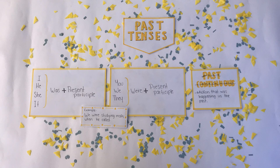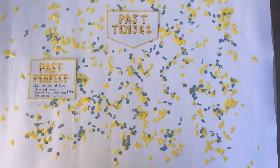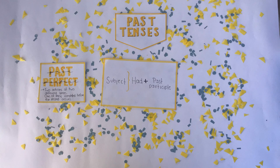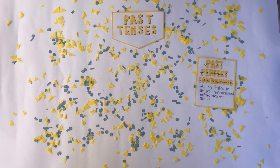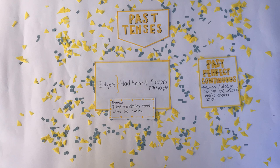Past perfect describes two actions at two different times, one of which is completed before the second occurs. We use had plus the past participle — for example, before I came here, I had spoken to you. Past perfect continuous describes an action that started in the past and continued before another action. We use subject plus had been plus present participle — for example, I had been playing tennis when she came.